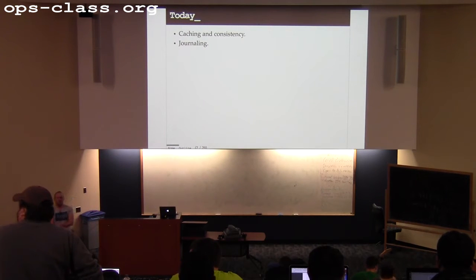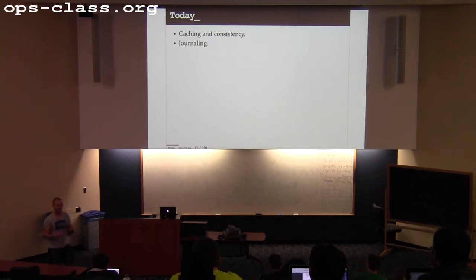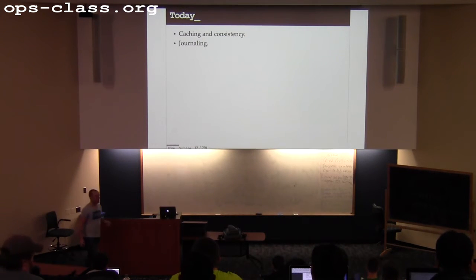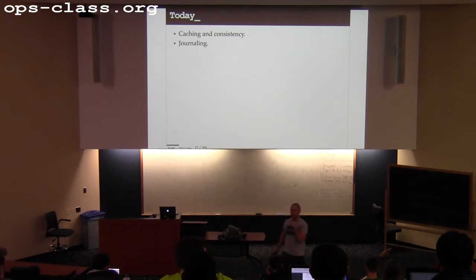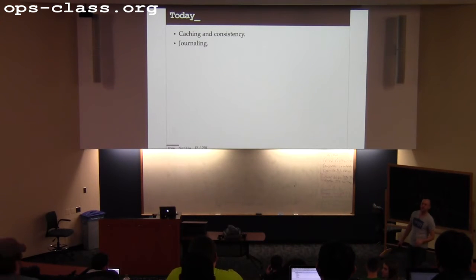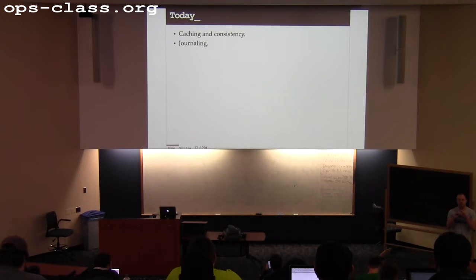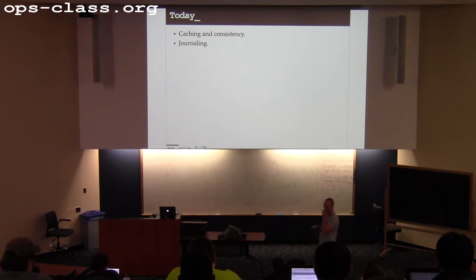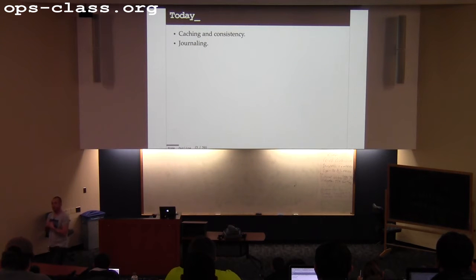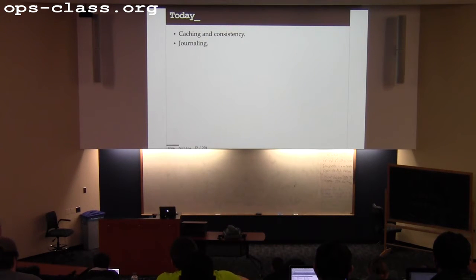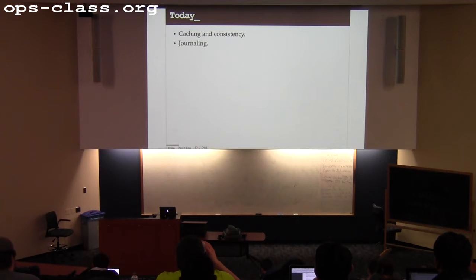Thin crowd today - I guess there's an assignment due or something? This must be the people that are done. Today we're going to finish up talking about general file system features. We'll talk about caching and consistency. There's this tension between making file systems fast, which involves storing their contents in memory, and ensuring that they're consistent after crashes and other kinds of failures. Those two goals are in direct conflict. We'll start off talking about how we make file systems fast by throwing memory at the problem, and later today or maybe Monday, we'll talk about consistency approaches.